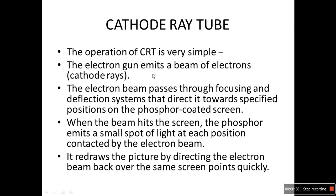The electron gun emits a beam of electrons — that is, cathode rays. The electron beam passes through focusing and deflection systems that direct it towards a specified position on the phosphor-coated screen. The electron beam emitted by the electron gun passes through deflection plates which adjust the position and it is focused on the phosphor-coated screen.